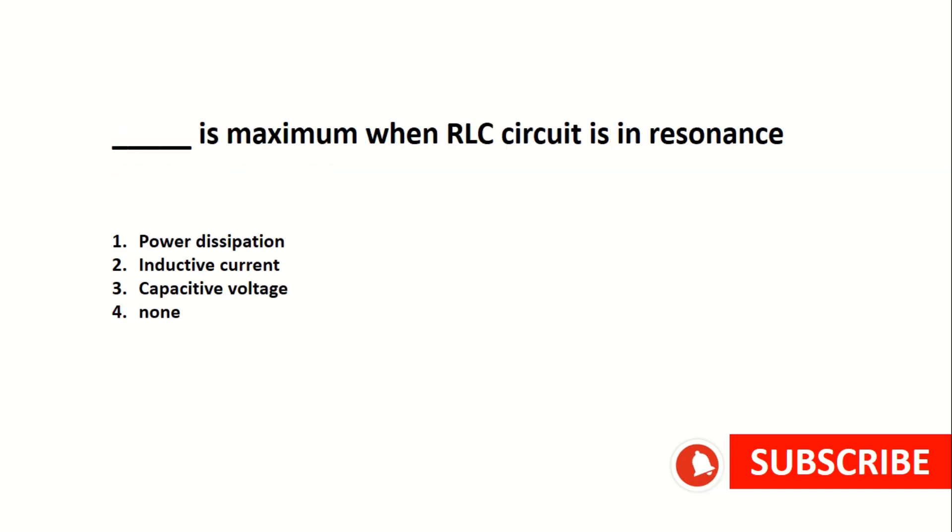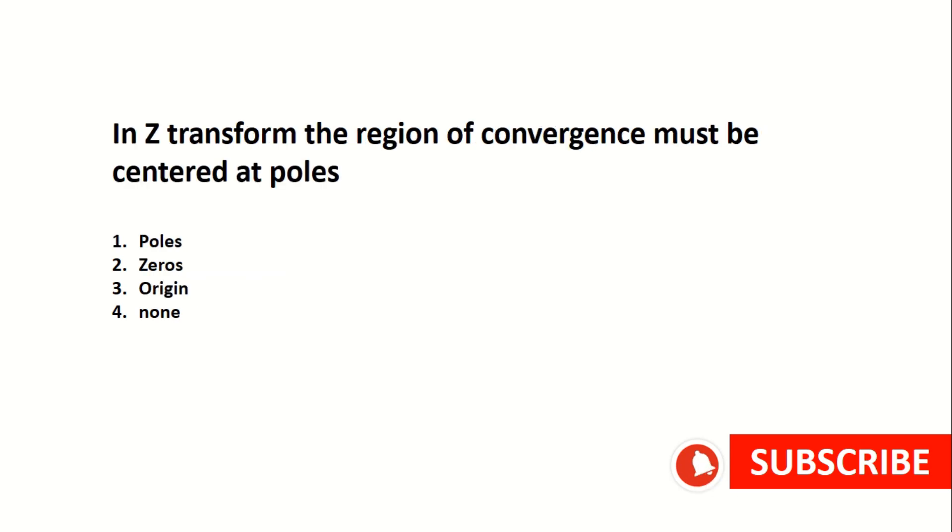Power dissipation is maximum when RLC circuit is in resonance. In Z transform, the region of convergence must be centered at the origin.